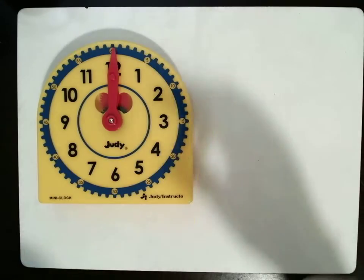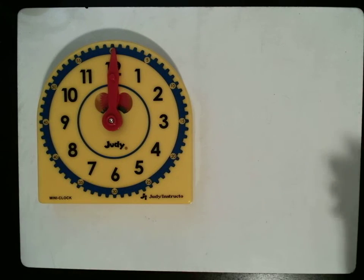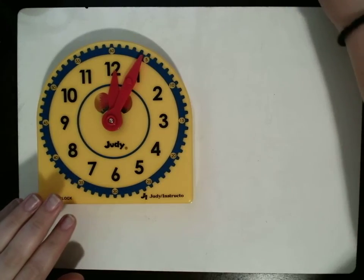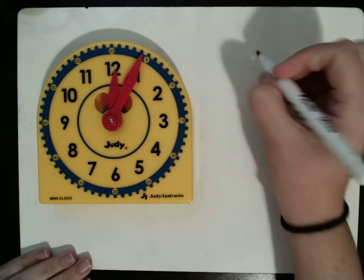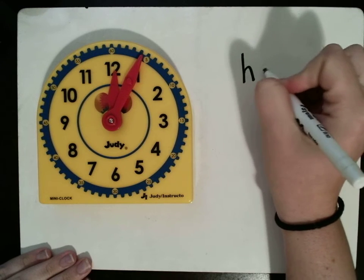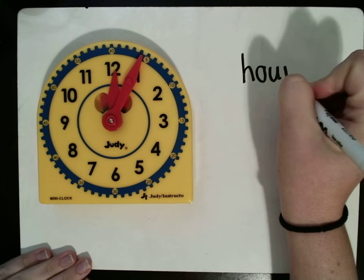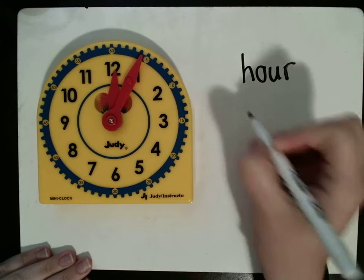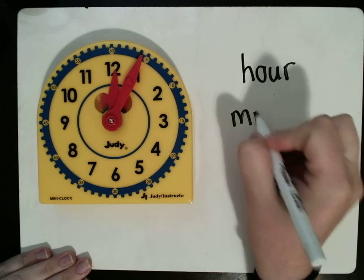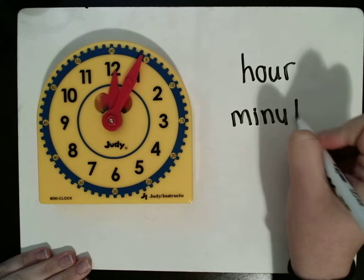With an analog clock, there are two hands on this clock. One of those hands is the hour hand. The other one is the minute hand.